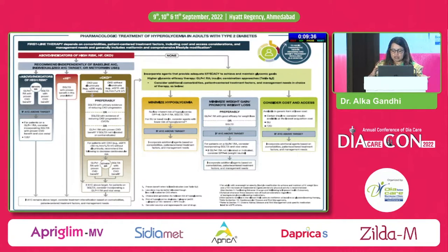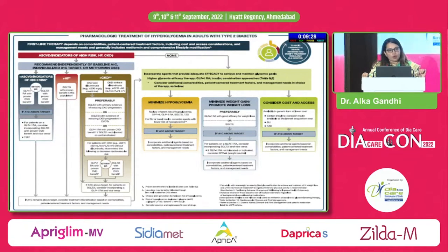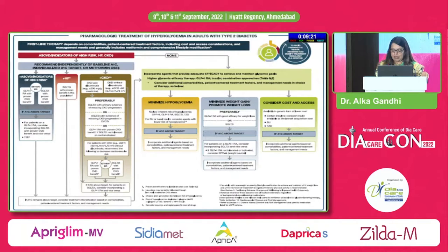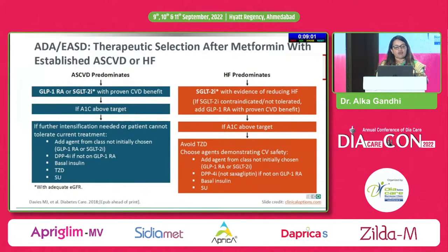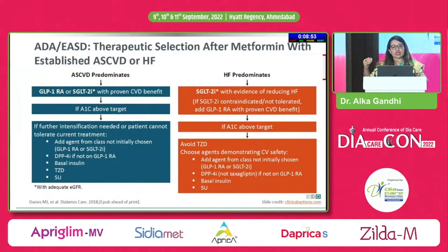Guidelines also suggest avoiding therapeutic inertia — assessing the patient every 3 to 6 months and avoiding the burden of unwanted hyperglycemia. If the patient has ASCVD, heart failure or CKD with or without albuminuria, you can use SGLT2 inhibitors or GLP-1 receptor agonists. For ASCVD predominance, use GLP-1 or SGLT2 inhibitor with proven benefit. If not controlled, add an agent from a different class — basal insulin, TZD or SU.